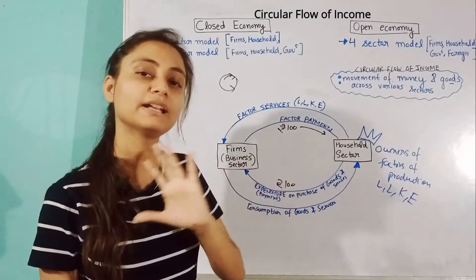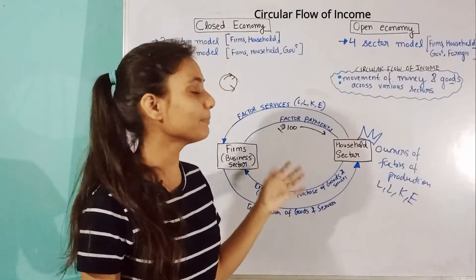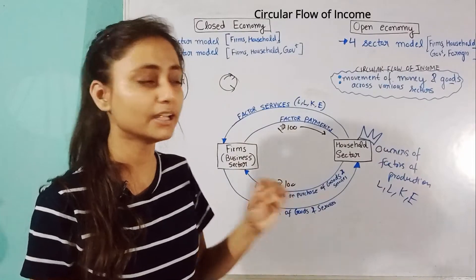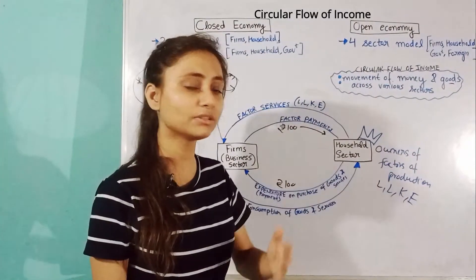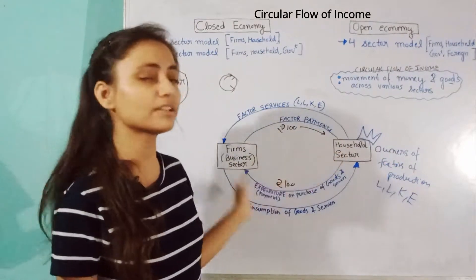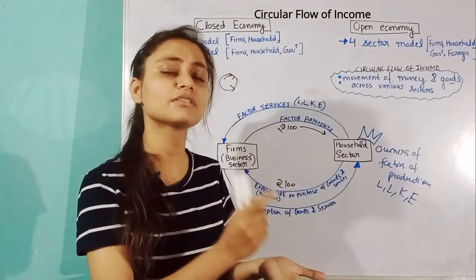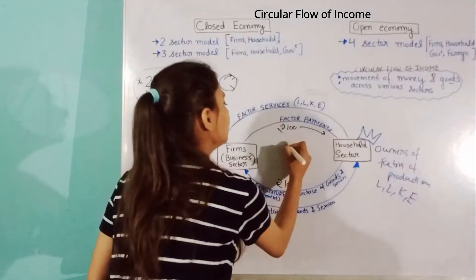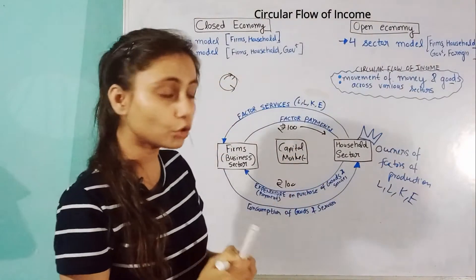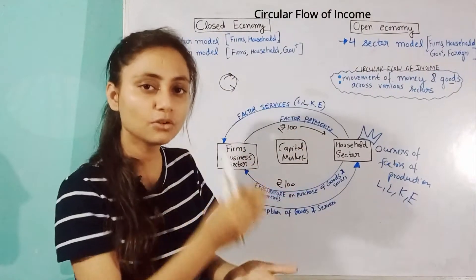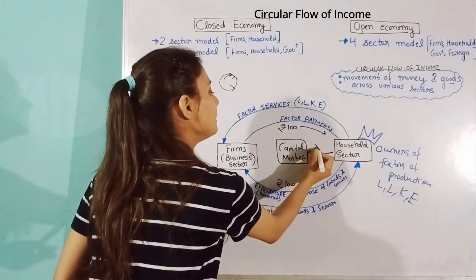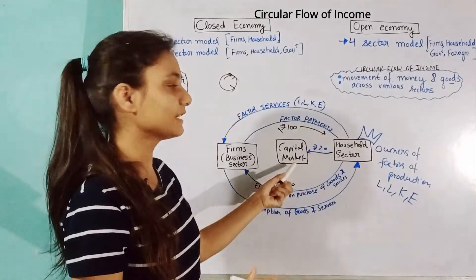So far I took a very basic model without banking services. But in reality, if the household sector gets Rs. 100, will they spend all of it? No — people also do saving. So now I'm going to add the capital market. When banking services are activated and the banking system is working, the household sector will save some money in the bank. Let's say they saved Rs. 20.